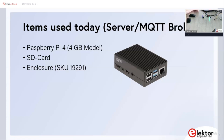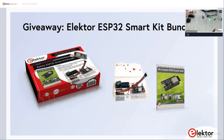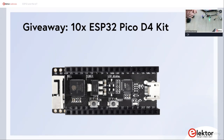In the back end we used a Raspberry Pi 4 with an SD card on the other side of the lab room. That Raspberry Pi 4 is our MQTT broker — we'll talk about that later. We also have giveaways today: an Elektor ESP32 Smart Kit bundle as first prize, and ten ESP32 Pico D4 kits with female headers. Just stay to the end and our support team will draw the winners.